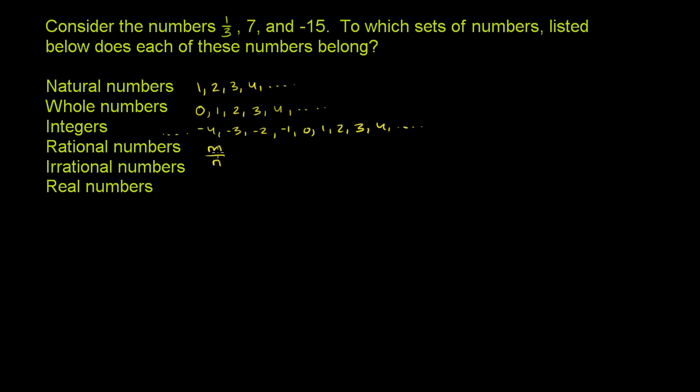m could be 0, and in fact, 0 is a rational number, because 0 can be represented as 0 over 1, or really 0 over 2, or 0 over 3. I think you get the idea. Or 0 over negative 537. These are all representations of 0, and you have an integer in the numerator, integer in the denominator. So 0 is definitely a rational number. You just can't have the denominator be 0.